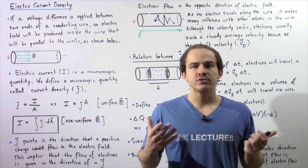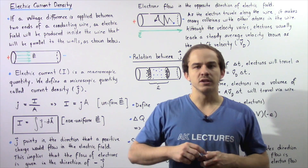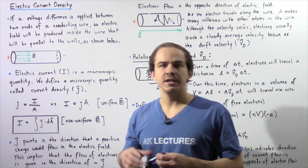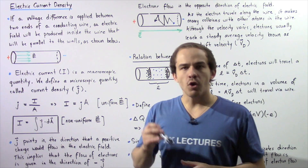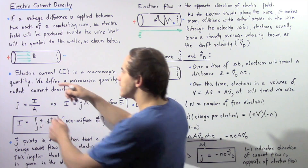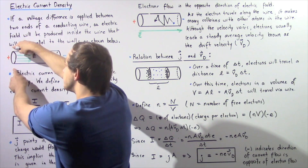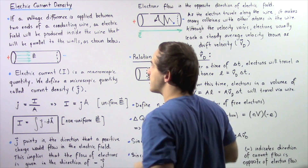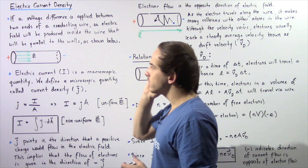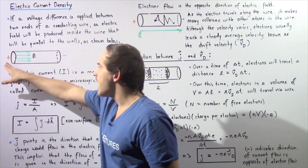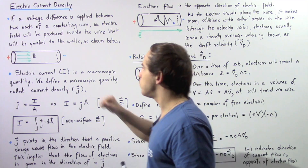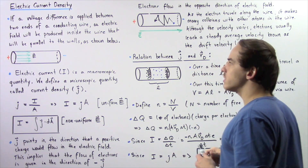In this lecture we're going to discuss electric current density and drift velocity of electrons. Let's begin by looking at the cross section of a conducting wire. If a voltage difference is applied between the two ends of our conducting wire, so that one end is at higher potential and the other at lower potential, an electric field will be produced inside our conducting wire, beginning on the higher potential side and ending on the lower potential side, pointing in the positive direction along our x-axis.